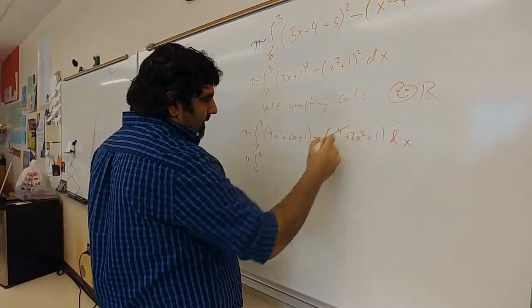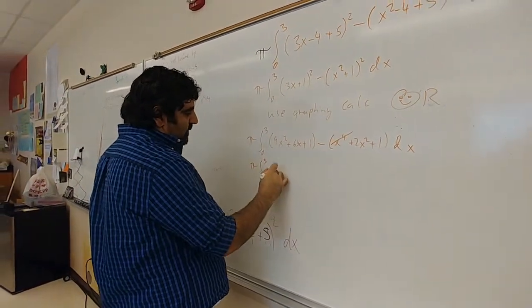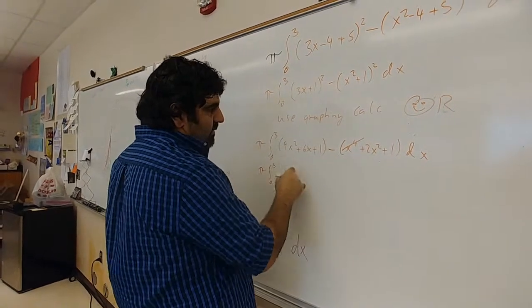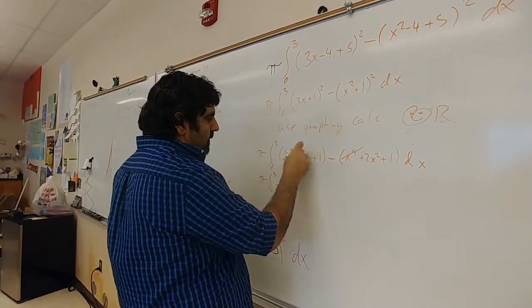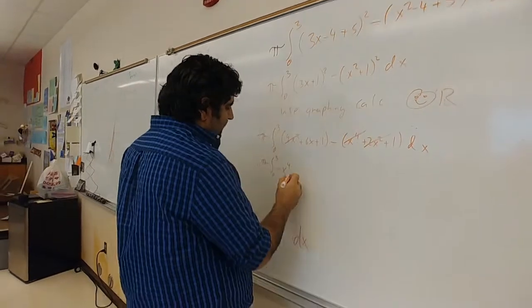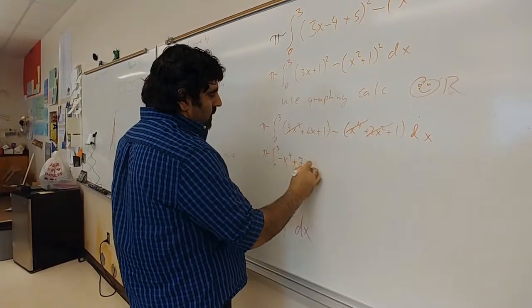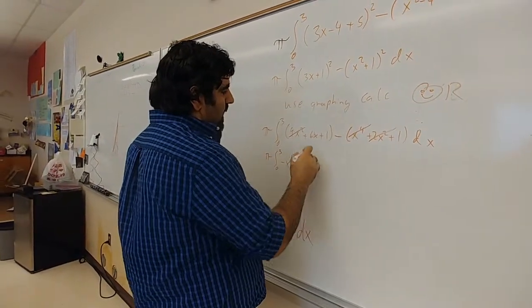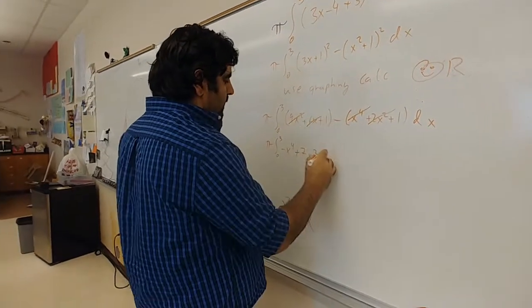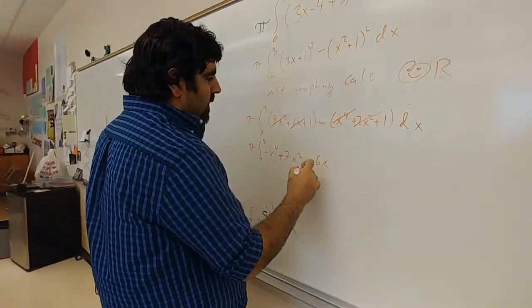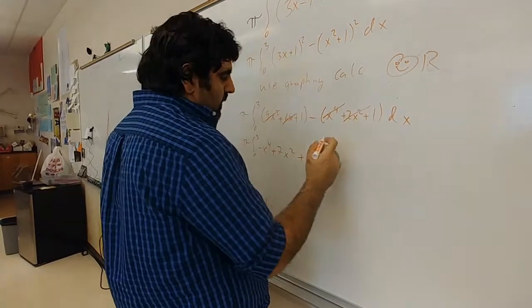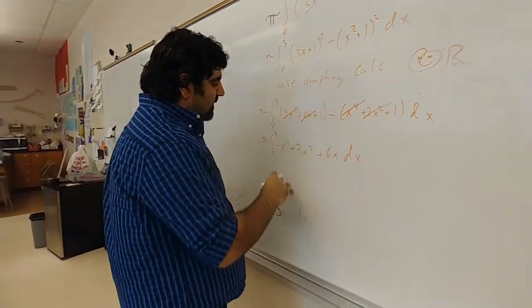Then you just pretty much combine stuff. So I have an x to the fourth, so negative x to the fourth, and then I have an x squared right here and x squared right here, so that's 9 minus 2, which is 7. And then I have an x, so that's plus 6x, and then I have a 1 minus 1, which is 0.